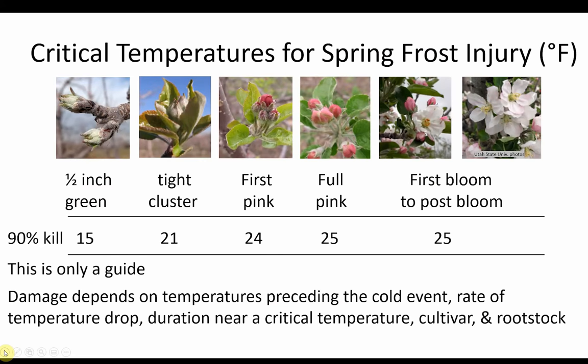Let's begin with low temperature injury. Most of the cultivars that we grow are not injured by low winter temperatures. However, in late winter, the fruit buds begin to deacclimate. Once apple trees begin growth in the spring, they go through a progression of stages, beginning with silver tip, where just the tips of the new leaves are visible, to half-inch green, tight flower cluster, first pink, full pink, first bloom, full bloom, and then petal fall. As the flower buds progress through these stages, they become increasingly susceptible to cold injury.